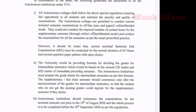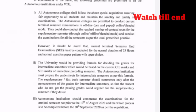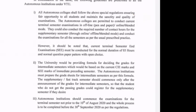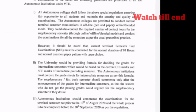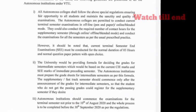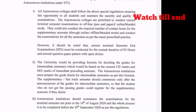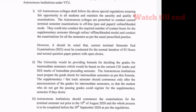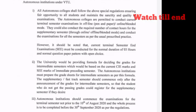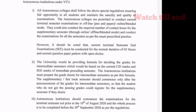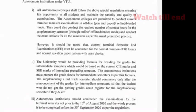The next point: autonomous institutions should commence examinations for terminal semester students not prior to 10th August 2020, and the whole process must be completed before 30th September. Friends, autonomous colleges are especially mentioned — the final semester students will complete their exams within 30th September. We will get a PDF and can check that file for details.